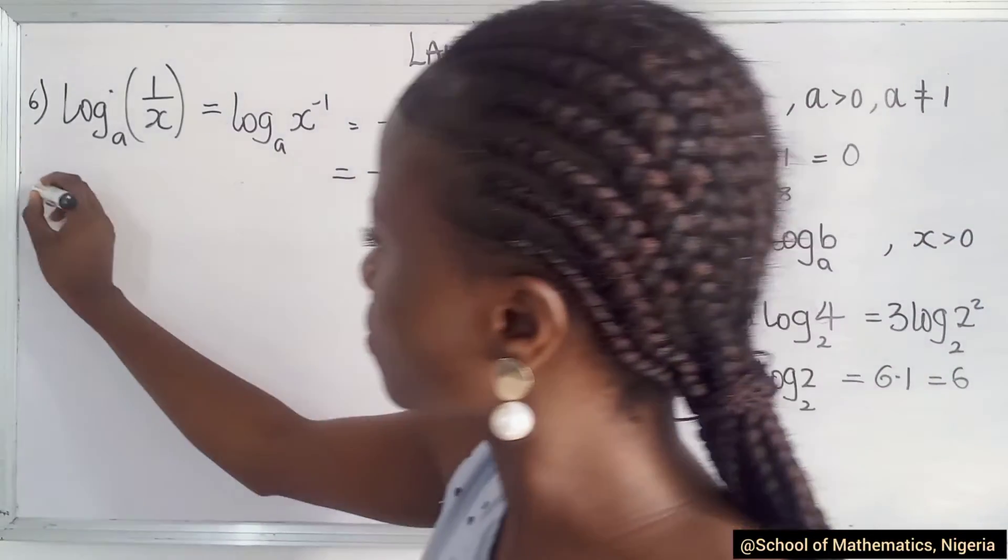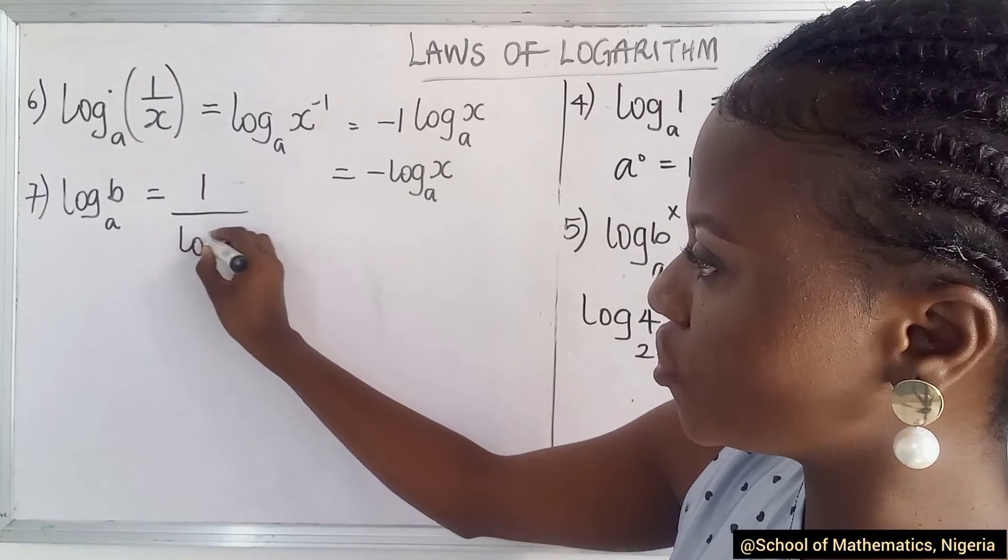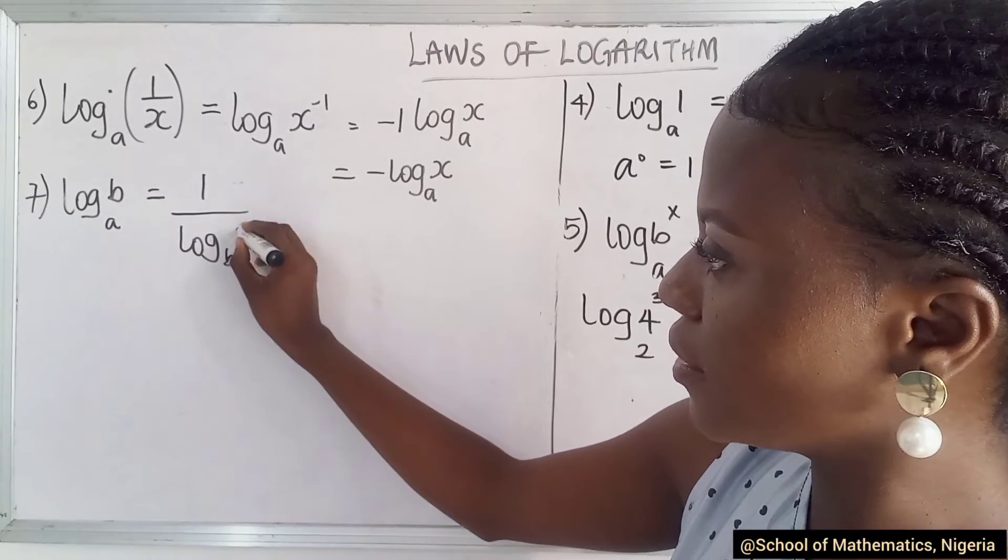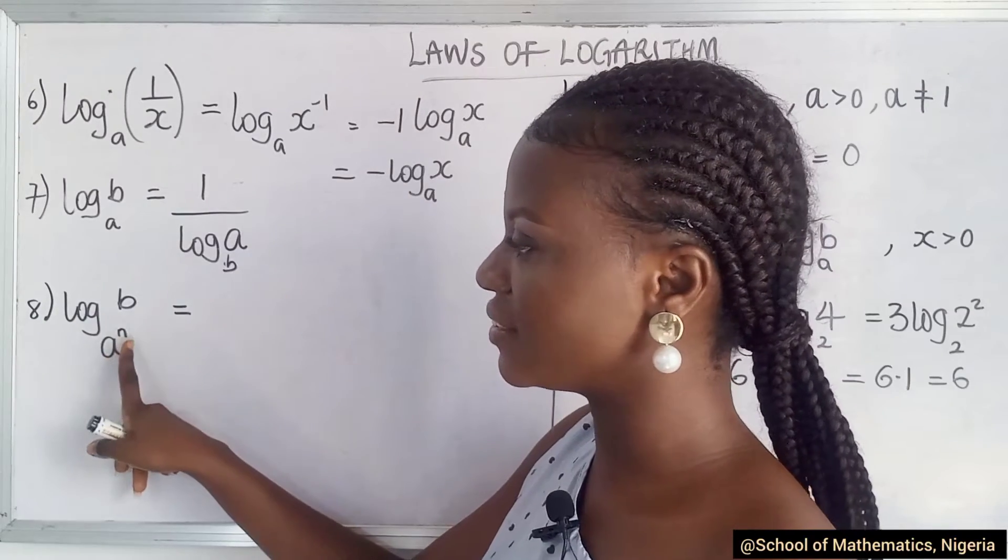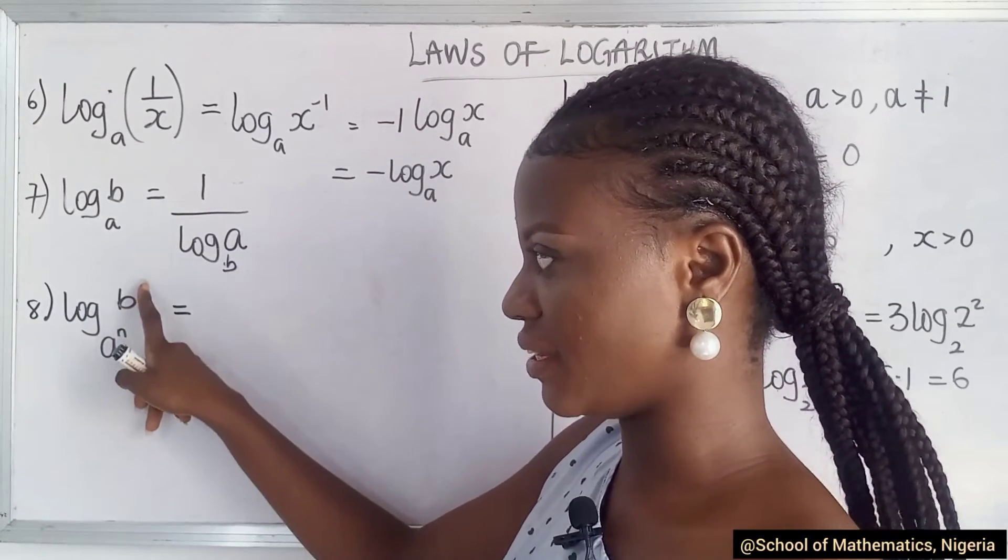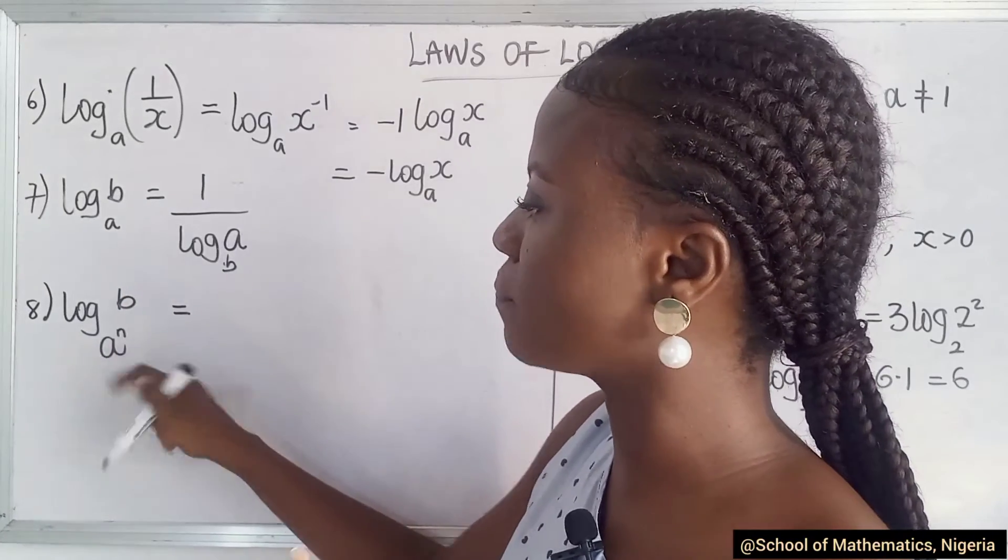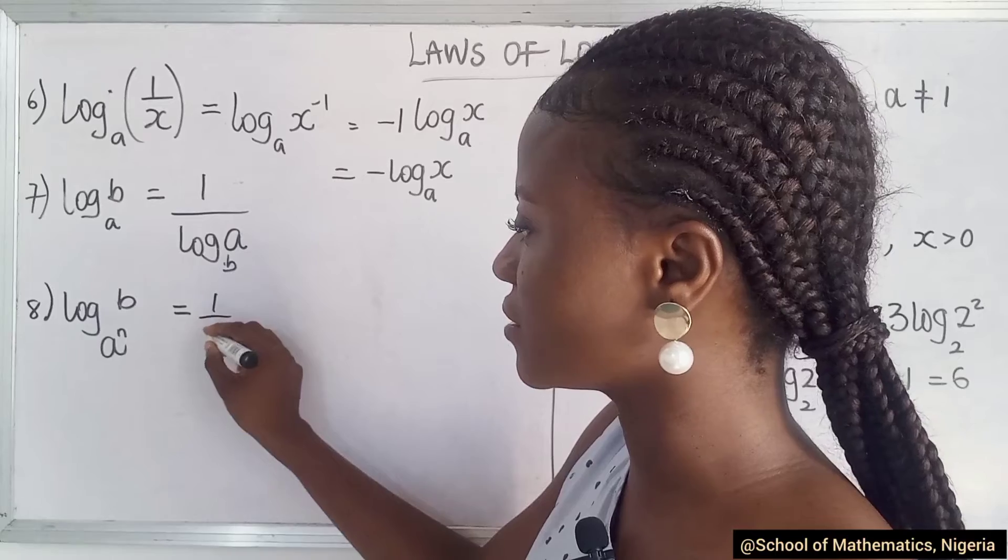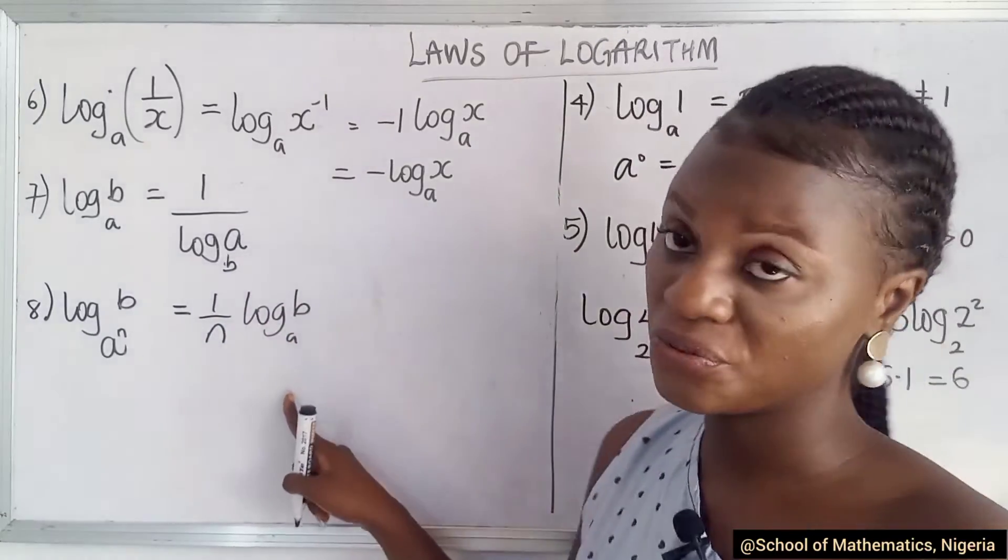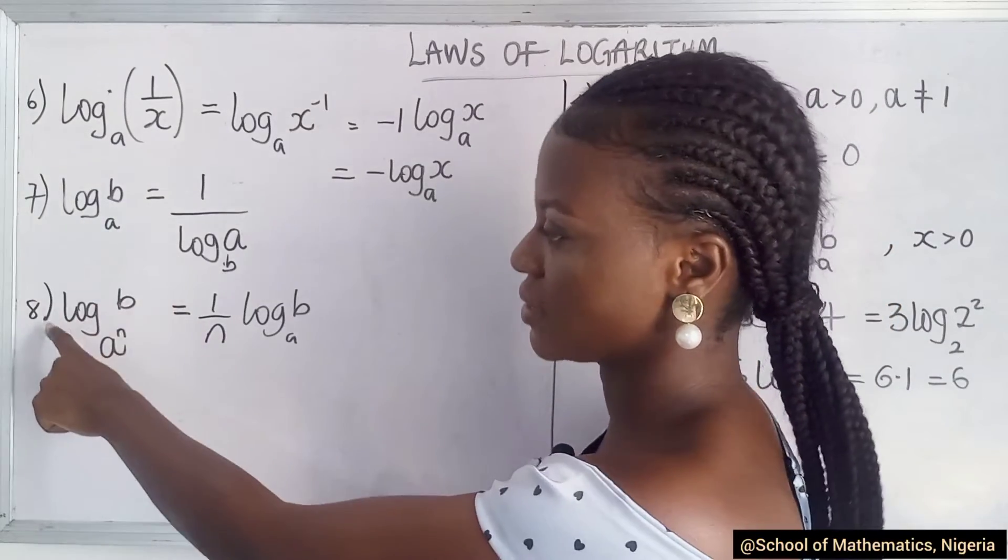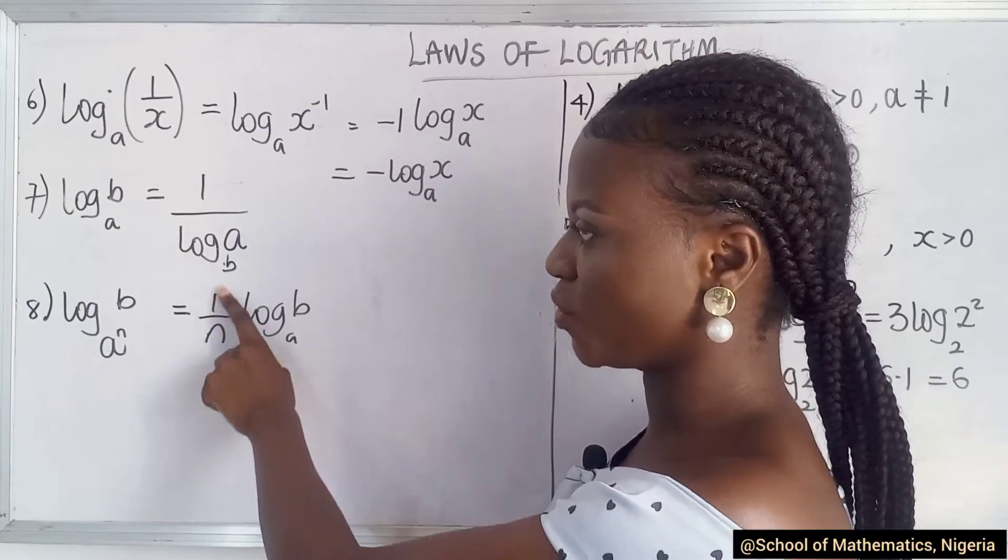So moving to the next law, you can also have a case like this where you have 1 over, then you change. B becomes your base, and A becomes this. So you see? For this case, your power is on the base, not here. Do you remember the other one where we had the power here? For this case, the power is on the base. So what happens? It becomes the inverse, and then you write this. Do you see the difference from the other one? The other one was here, and we just took it to the back. But for this case, it's on the base. So it becomes the inverse.